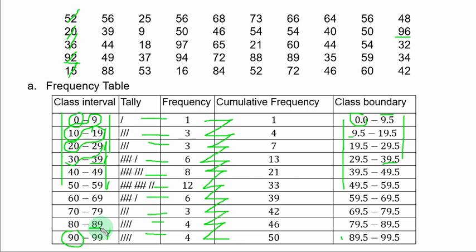Let's take 89 plus 0.5, you have 89.5. So this is how you obtain the class boundary.